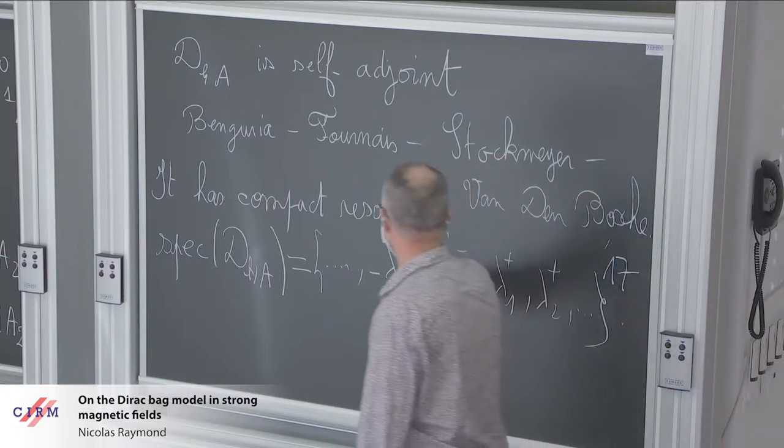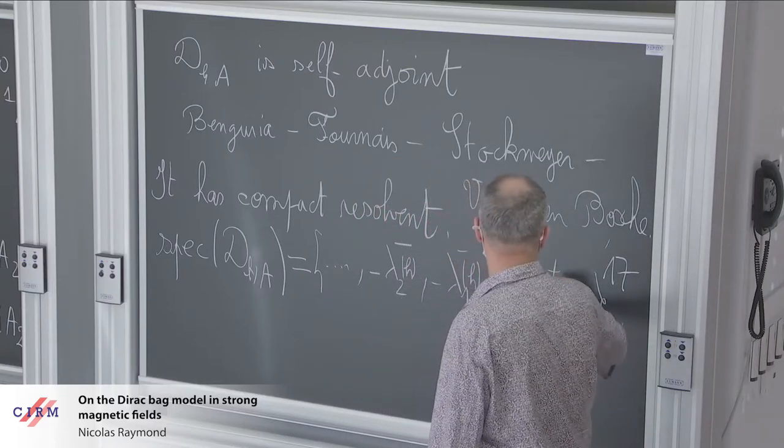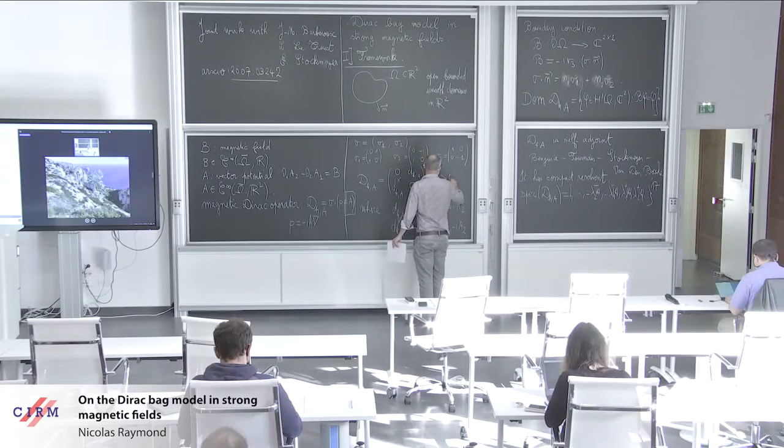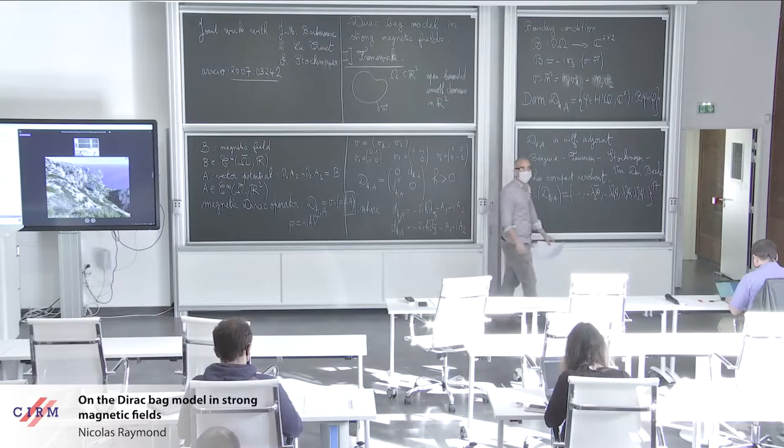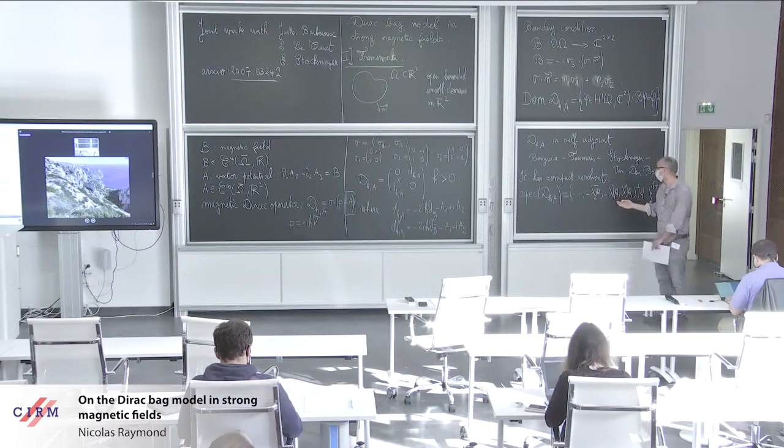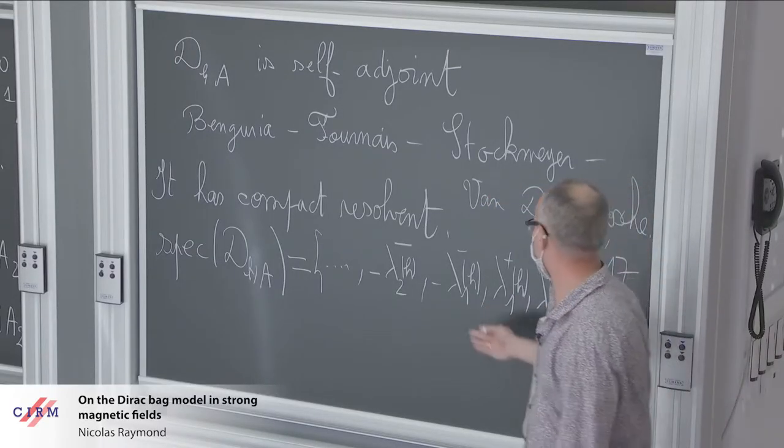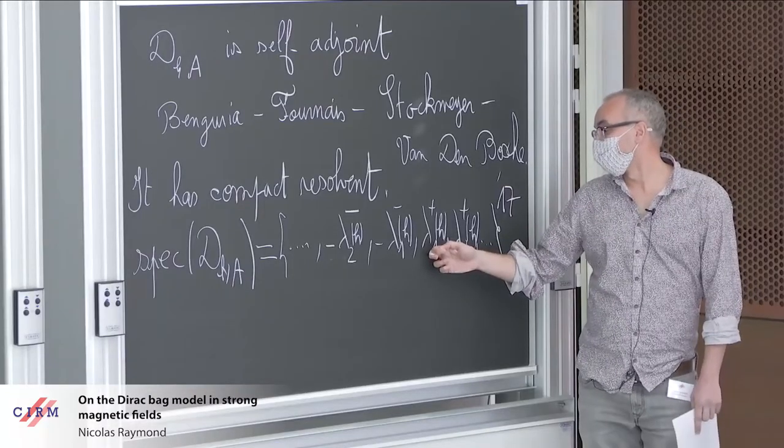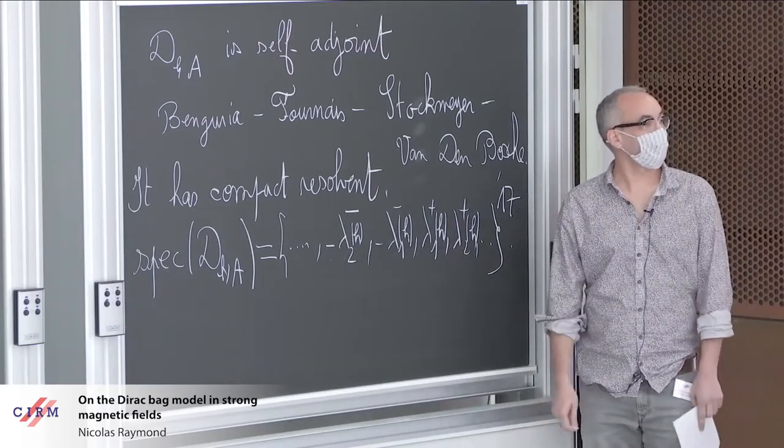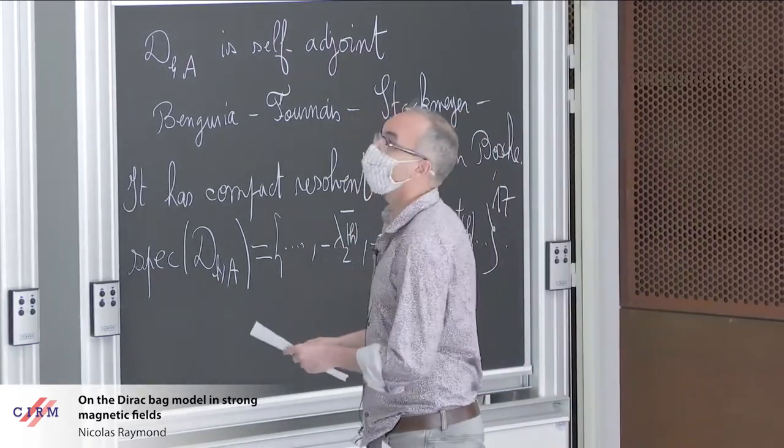Of course, these quantities depend on H. H is a positive number, the semi-classical parameter. In this talk, H will go to zero. The aim of the talk is to describe the behavior of the eigenvalues when H goes to zero. For example, can we say something about lambda one plus of H when H goes to zero? Can we describe the asymptotic behavior of this eigenvalue?